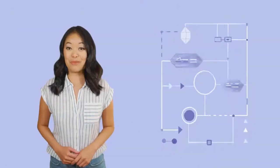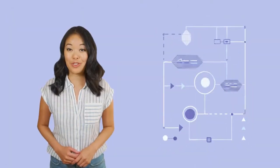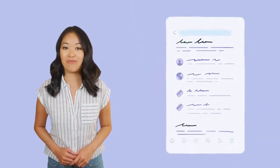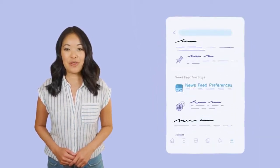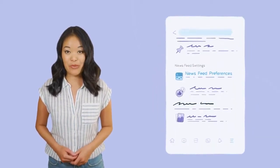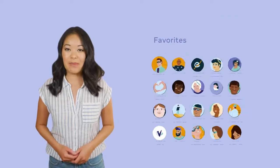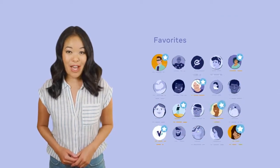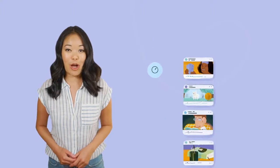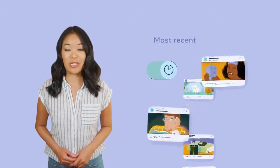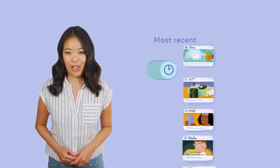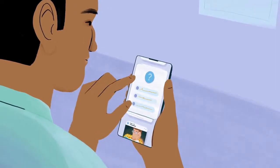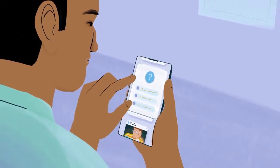We know that algorithms aren't perfect, so we've created a number of tools to help you customize your experience even more. You can do this through newsfeed preferences, where you can use tools like favorites to pick the top 30 people and pages you want to see most. There's also an option to see posts chronologically by using the most recent tool. We also use surveys to get direct feedback by asking, is this post worth your time?